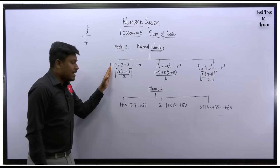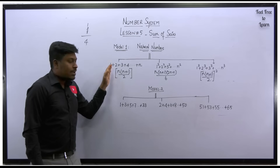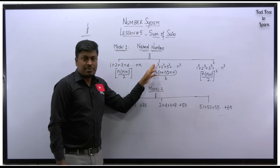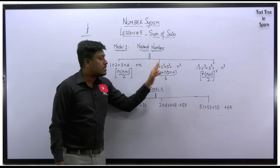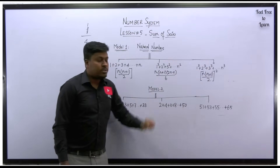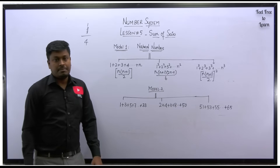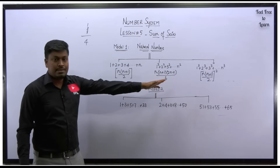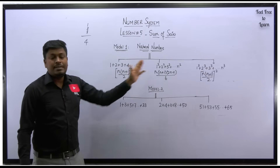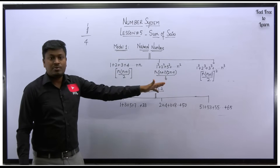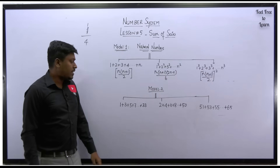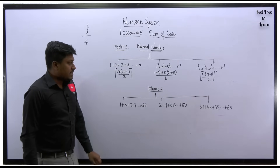So these are the 3 formulas we have to learn for model number 1 — natural numbers: the first for normal natural numbers, the second for square natural numbers, and the third for cube natural numbers. The first formula and the third formula are easy; the only difference is we have to square the entire number.